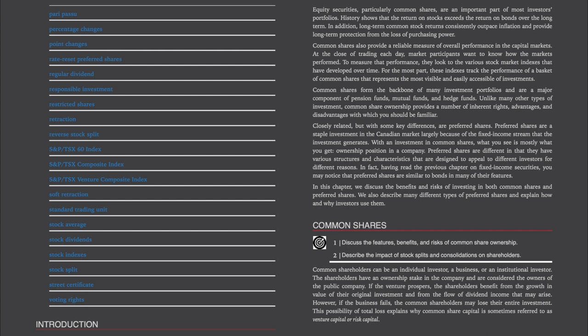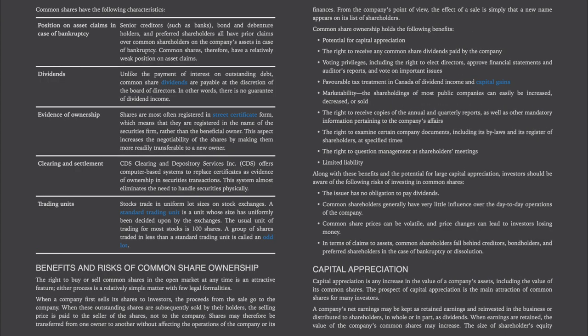Section 1: Common Shares. Common shareholders can be an individual investor, a business, or an institutional investor. The shareholders have an ownership stake and are considered the owners of the public company. If the venture prospers, shareholders benefit from growth in value and dividend income. However, if the business fails, the common shareholders may lose their entire investment — which is why common share capital is sometimes referred to as venture capital or risk capital. Common shares have a relatively weak position on asset claims: senior creditors, bond and debenture holders, and preferred shareholders all have prior claims on the company's assets in bankruptcy.